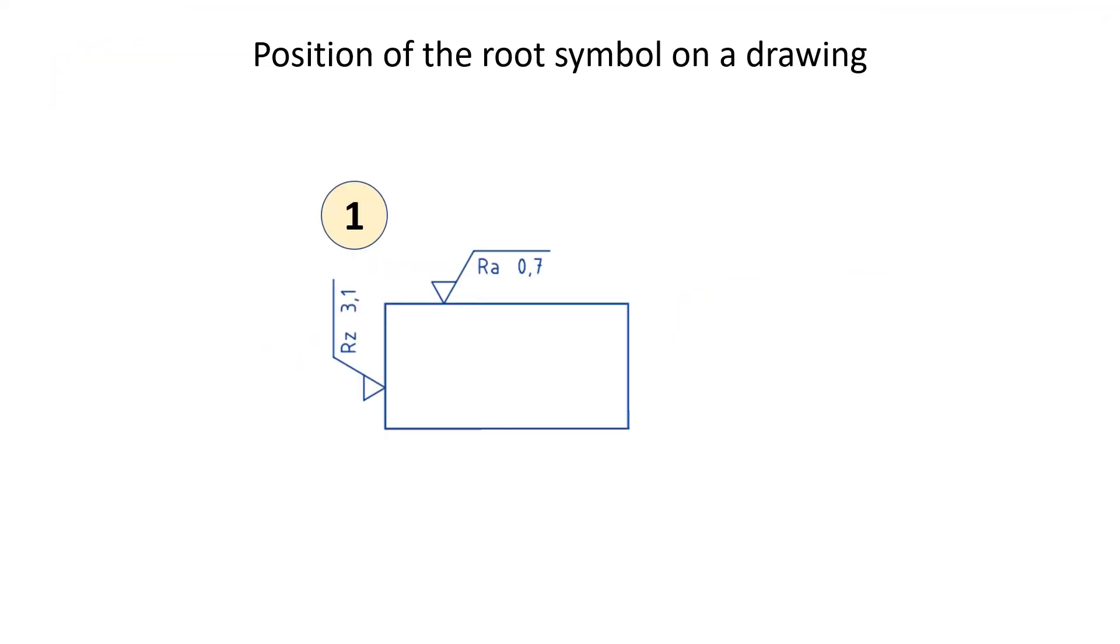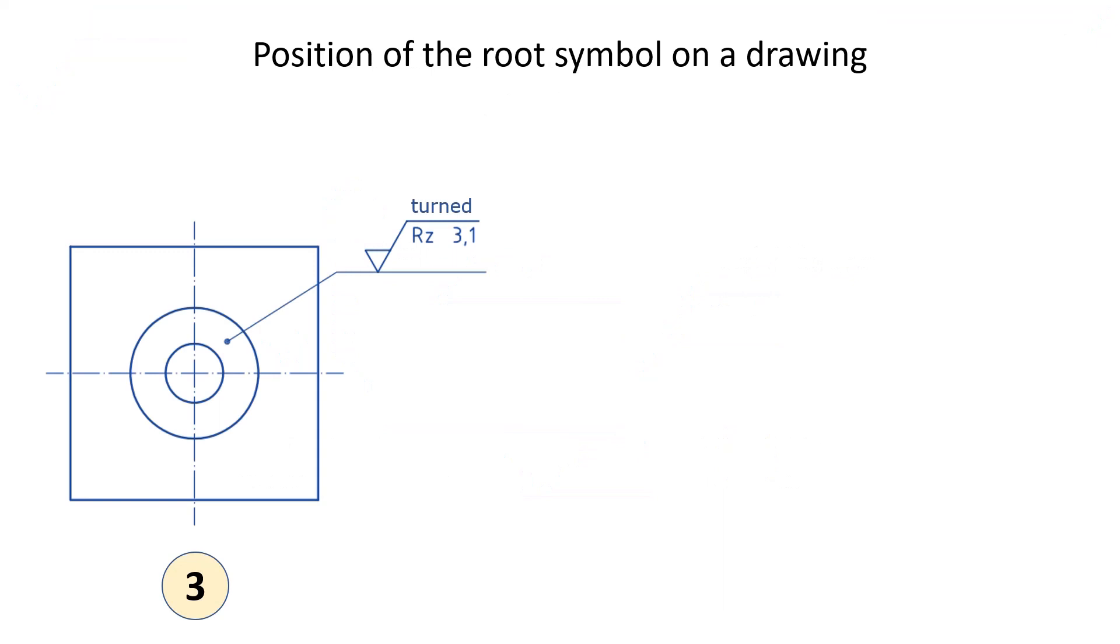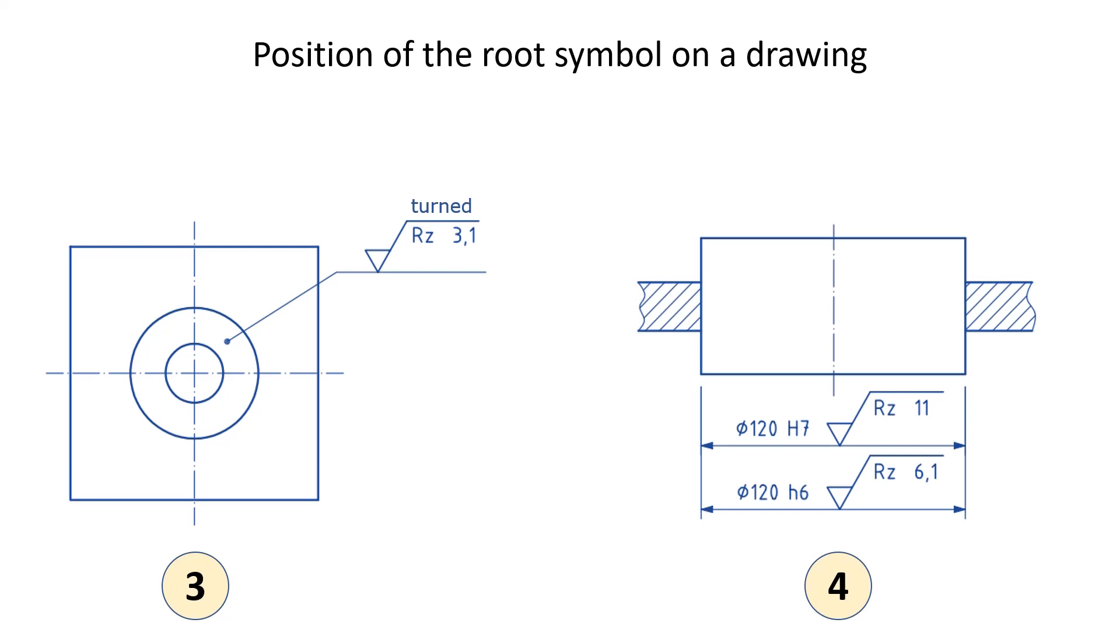The root symbol is usually placed on a drawing with the triangle in contact with the specified surface, horizontally or vertically. Or the symbol can be written on a leader line. On a face view, the leader line can point to an element. The root symbol can even be added on an existing dimension when there is no risk of confusion.